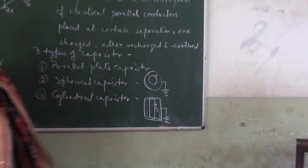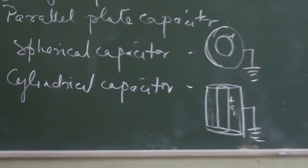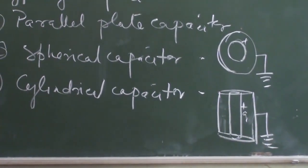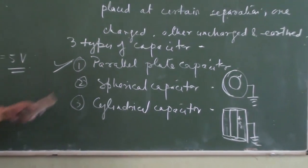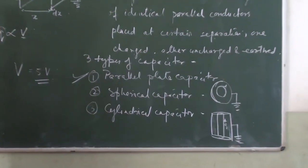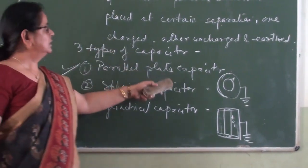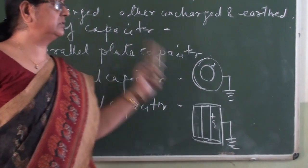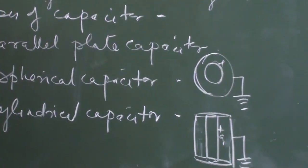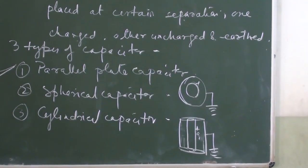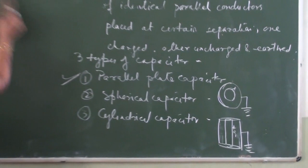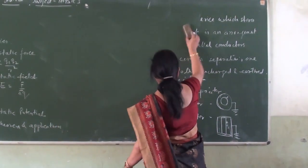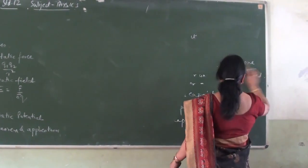So these are the three capacitors. In our syllabus we are limited to the parallel plate capacitor, so we will deal with that. The working principle of all three capacitors is the same as what we have explained: the inner conductor is charged and the outer conductor is uncharged and earthed. I hope you have understood the principle of the capacitor and how it can store charge.